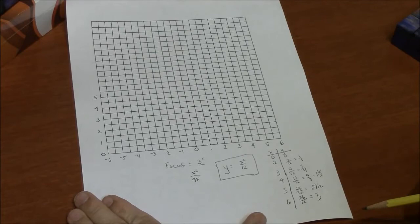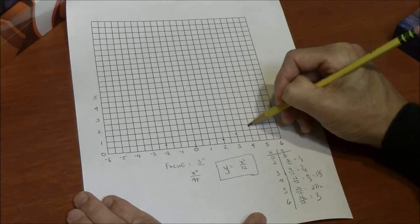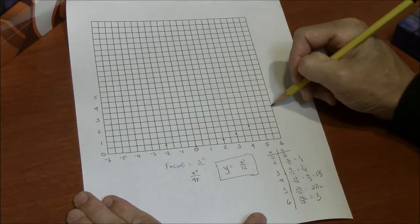So here my t-chart is complete. And I can plot the points. 3 equals 3 quarters. 4 equals 1 and 1 third. 5 is just a little bit more than 2. So here's 2 and a little bit more. And x equals 6, y equals 3, which is right here.